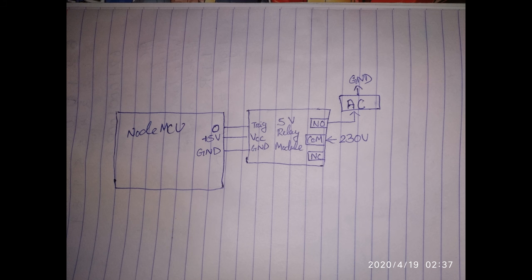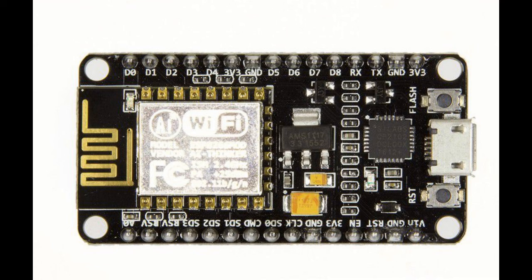Now let's move to the circuit section. You can see there is a NodeMCU, a 5-volt relay module, and your load like the AC. In the NodeMCU I will declare pin 0 as the output pin — you can declare any digital pin. I will connect it to the trigger pin of the 5-volt relay module. The 5-volt connection of the NodeMCU goes to VCC and ground to the ground of the relay module.